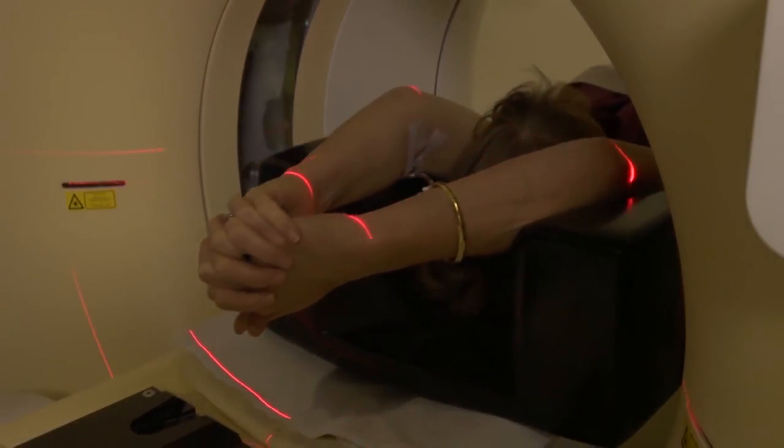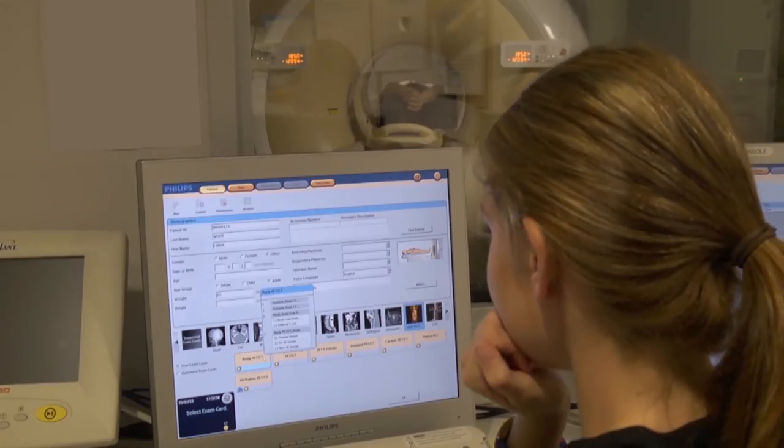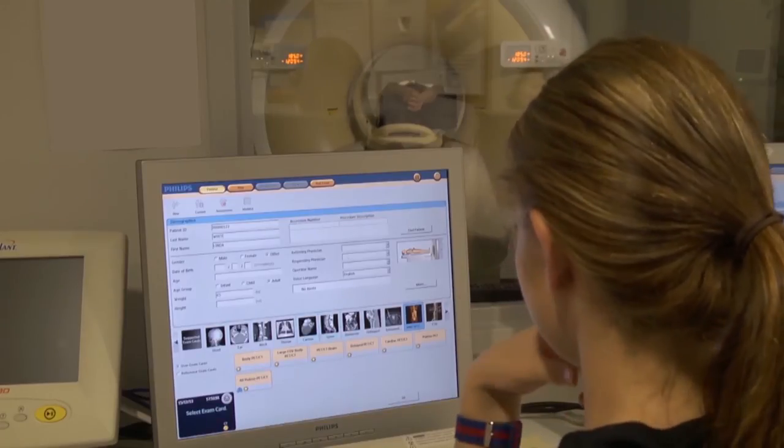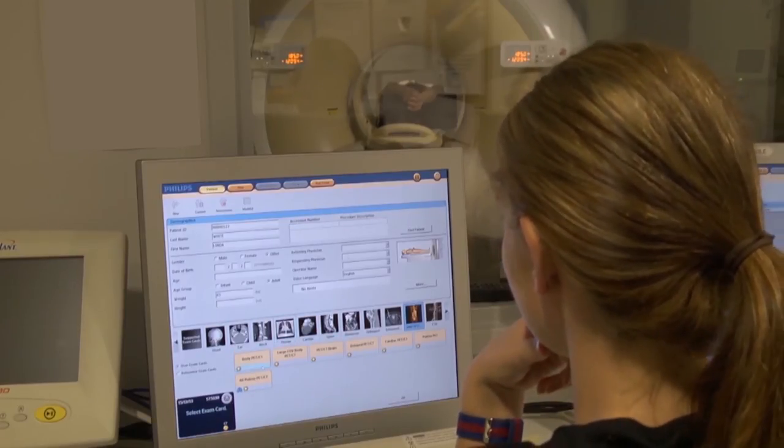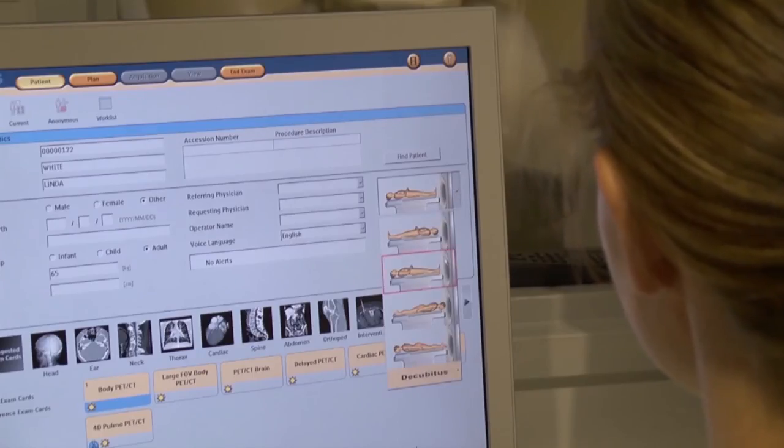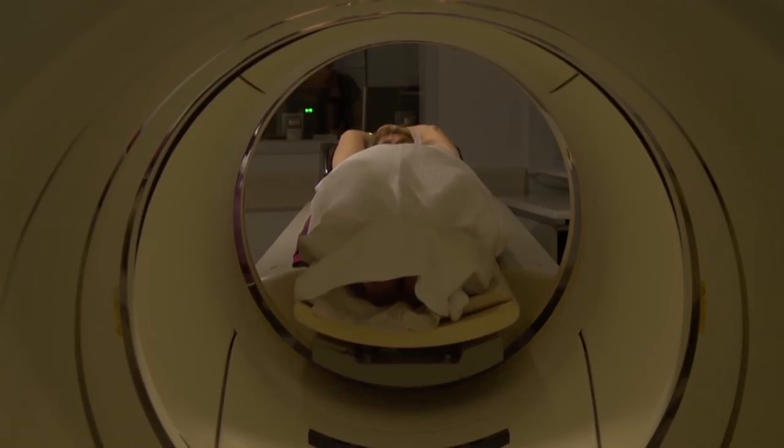The technologist sets up the scan along with the imaging protocols from a workstation in the control room. A low dose CT scan, called a scout scan, is then performed to further assist with the positioning of the patient and the setup of the scanner. This scout scan is completed relatively quickly.